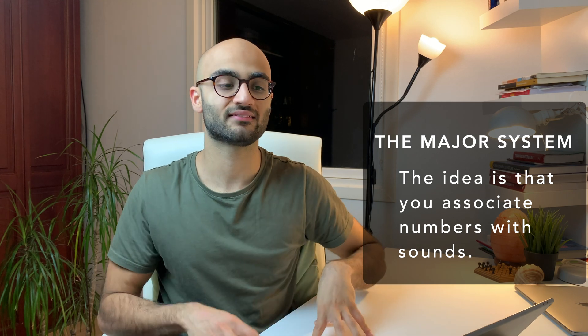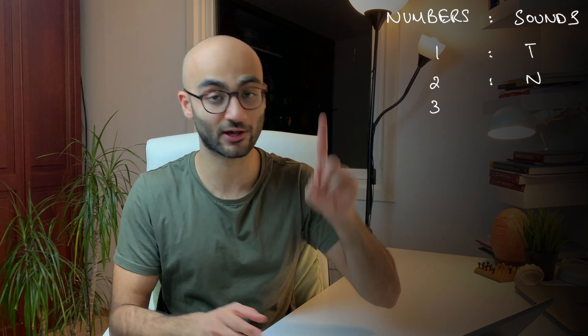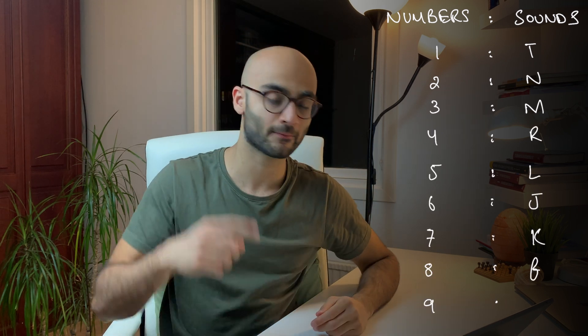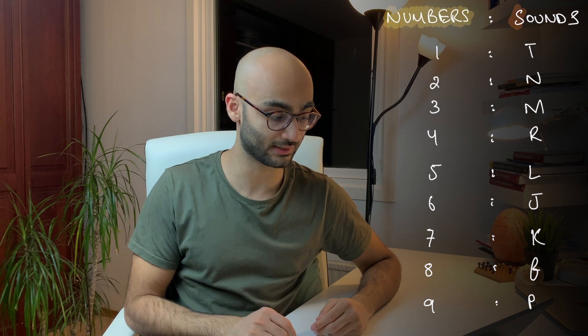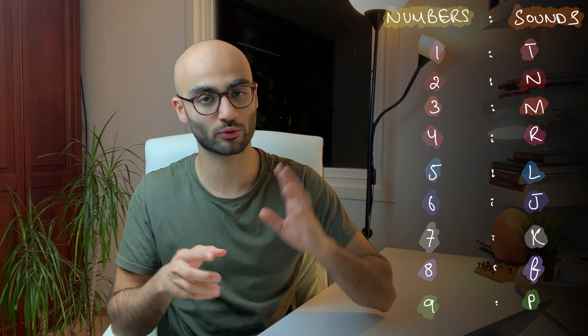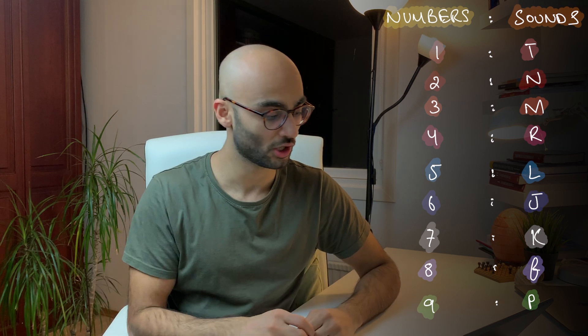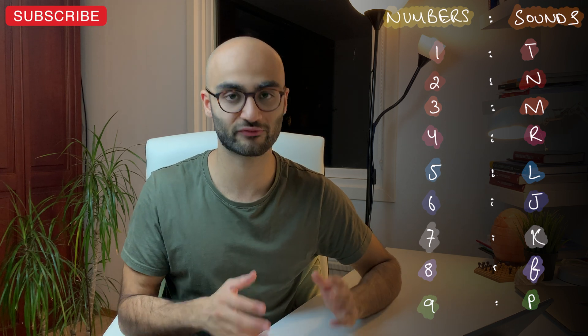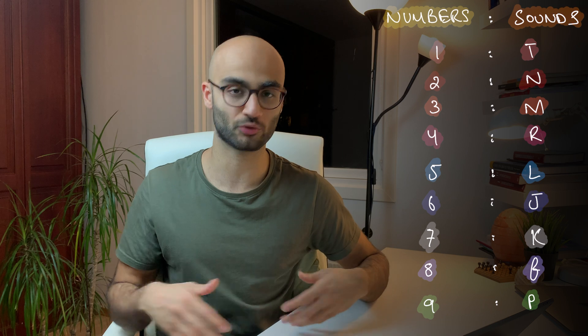How do you create a major peg system? The principle is that you associate numbers with sounds. The sound for number one is a T sound, because T has one vertical line. Number two is associated with N, because N has two vertical lines. Number three is associated with M, because M has three spots where it touches the baseline. Number four is associated with R, because four ends with the letter R.